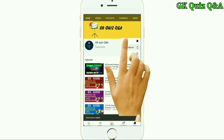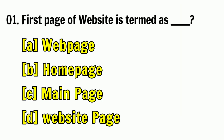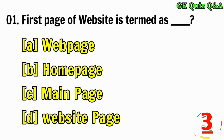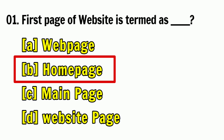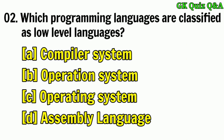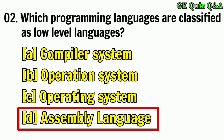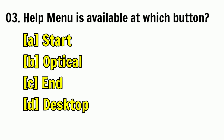The first page of a website is termed as — answer: home page. Which programming language is classified as a low-level language? Answer: assembly language. The help menu is available at which button? Answer: start.